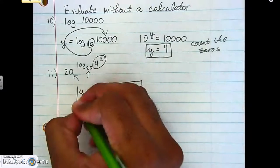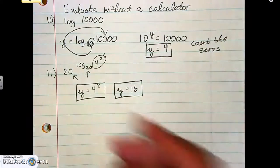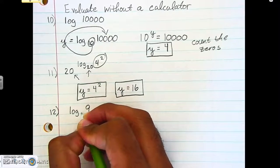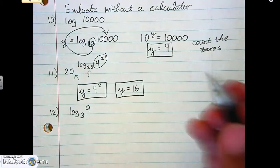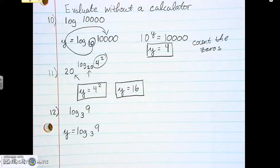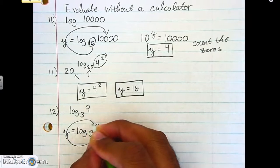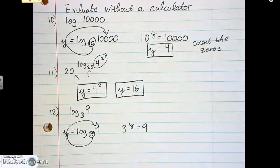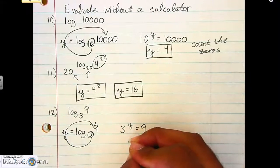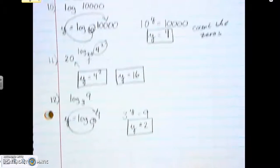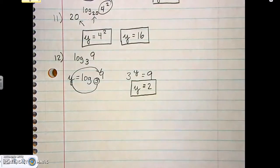And then number 12, we have log base 3 of 9. And again, we put y up there first, and we swoosh, do the swoosh. Okay, and so now the last part is thinking, okay, 3 to what power equals 9? So 3 to what power equals 9? And everybody should get a quick answer of 2. So 3 squared is 9, is that not right? Yes, yes it is. Okay, so not bad.